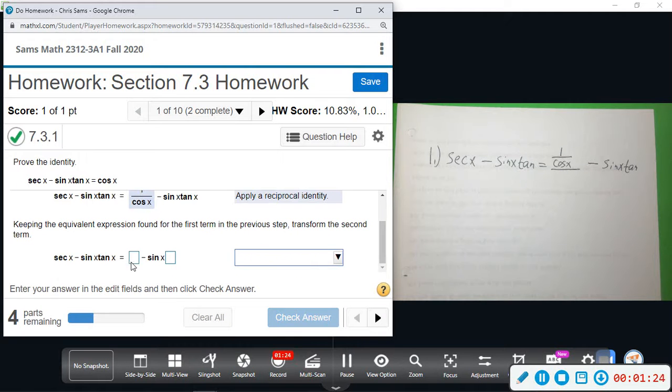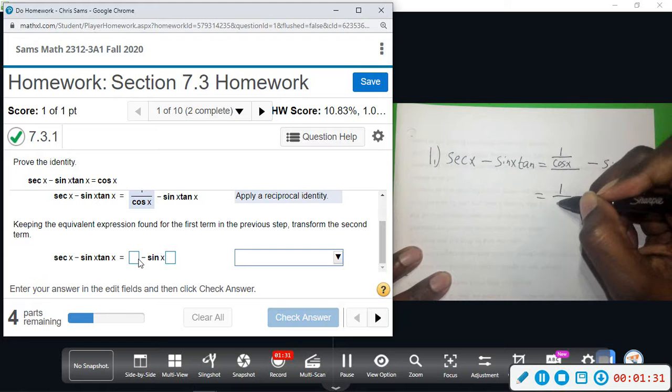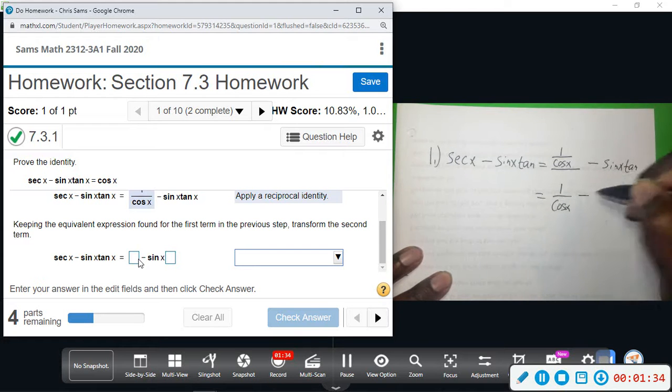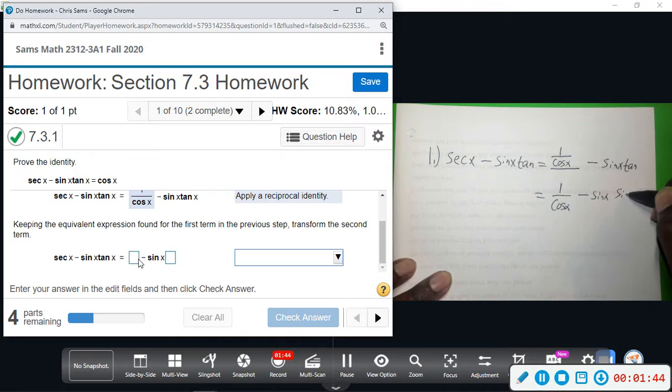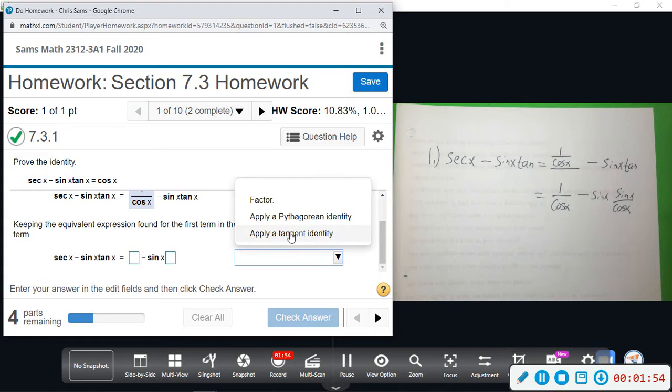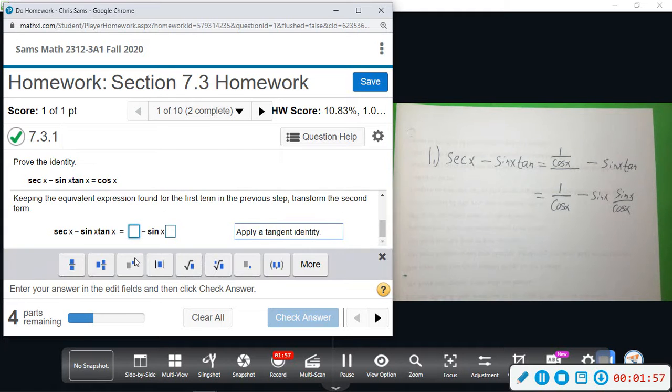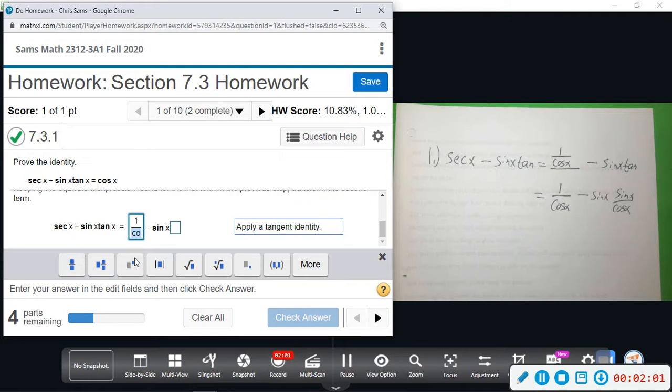Alright, then our next step. We're going to bring this down and now they're changing this next part. So we have 1 over cosine x, which we've already changed, and then minus. We have the sine here, sine x, but we can change tangent in terms of sine and cosine. That is the tangent identity, converting it to terms of sine and cosine. So we have 1 divided by cosine x, and then sine x divided by cosine x.